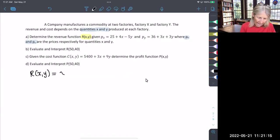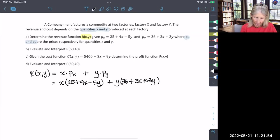We'll take quantity X and multiply it by price X, then add quantity Y multiplied by price Y. Since our revenue function consists of multiple quantities, we combine them together. So R(X,Y) = X·P(X) + Y·P(Y). We multiply X by P(X), which is 25+4X-5Y, and multiply Y by P(Y), which is 36+3X+3Y. Then we distribute X and Y and combine like terms.